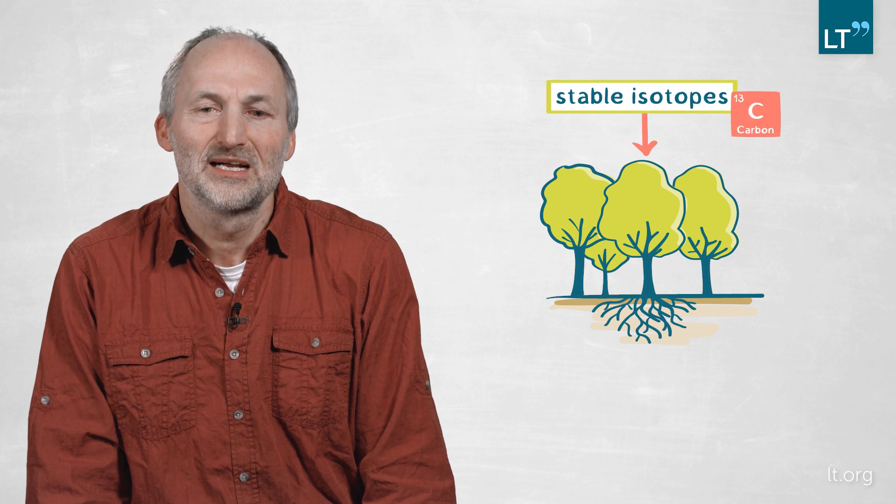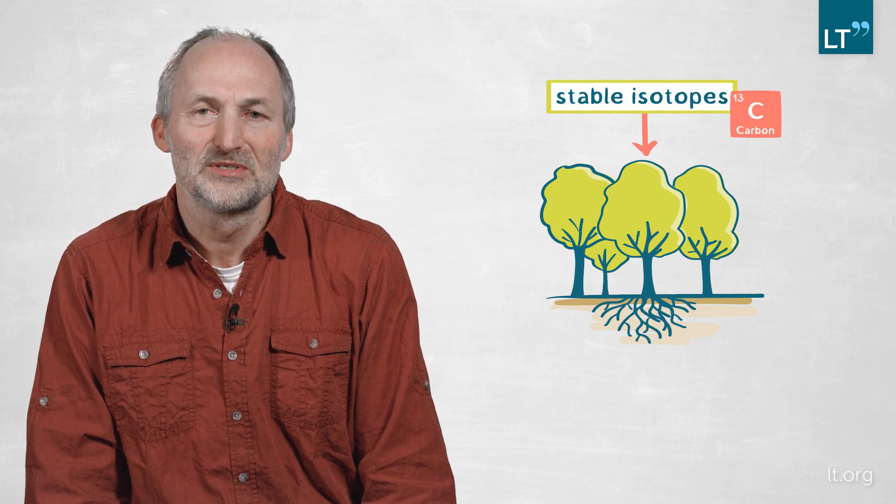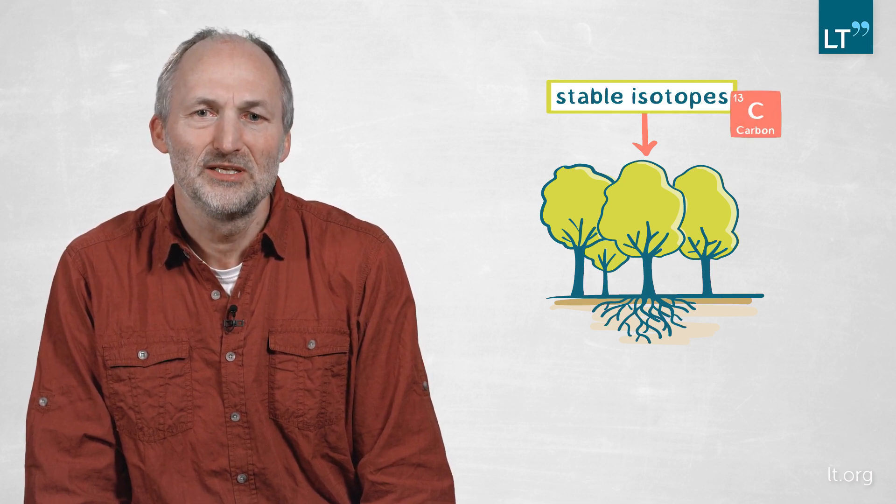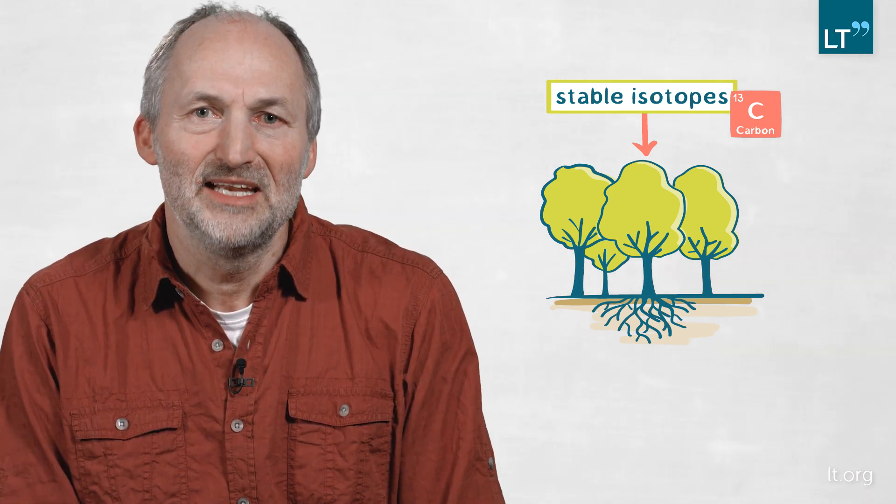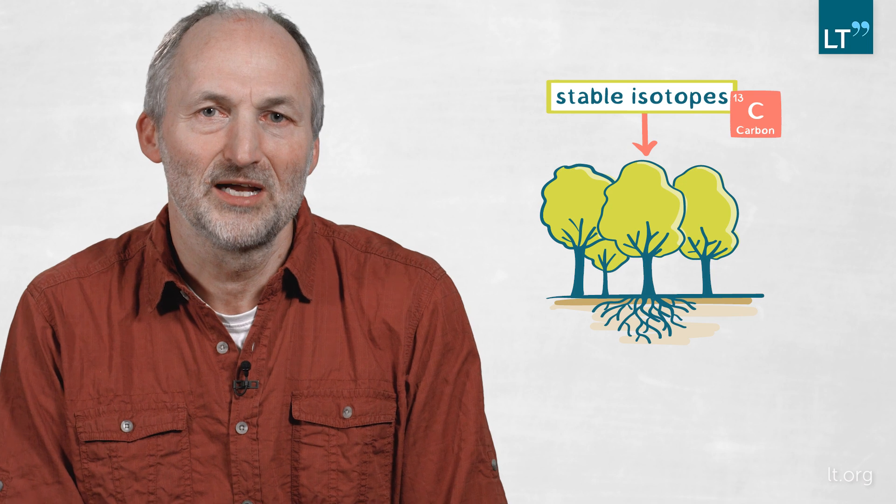We labeled a mature beech forest and followed that carbon into the below-ground system. We found that actually the great majority of the carbon enters this below-ground system via roots.